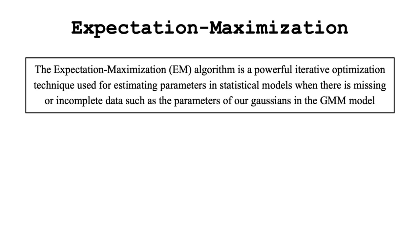In short, the expectation maximization algorithm is a quite powerful iterative optimization method supposed to estimate parameters in statistical models when there is missing or incomplete data such as the parameters of our Gaussians in the GMM model. And it consists of iteratively applying two steps.